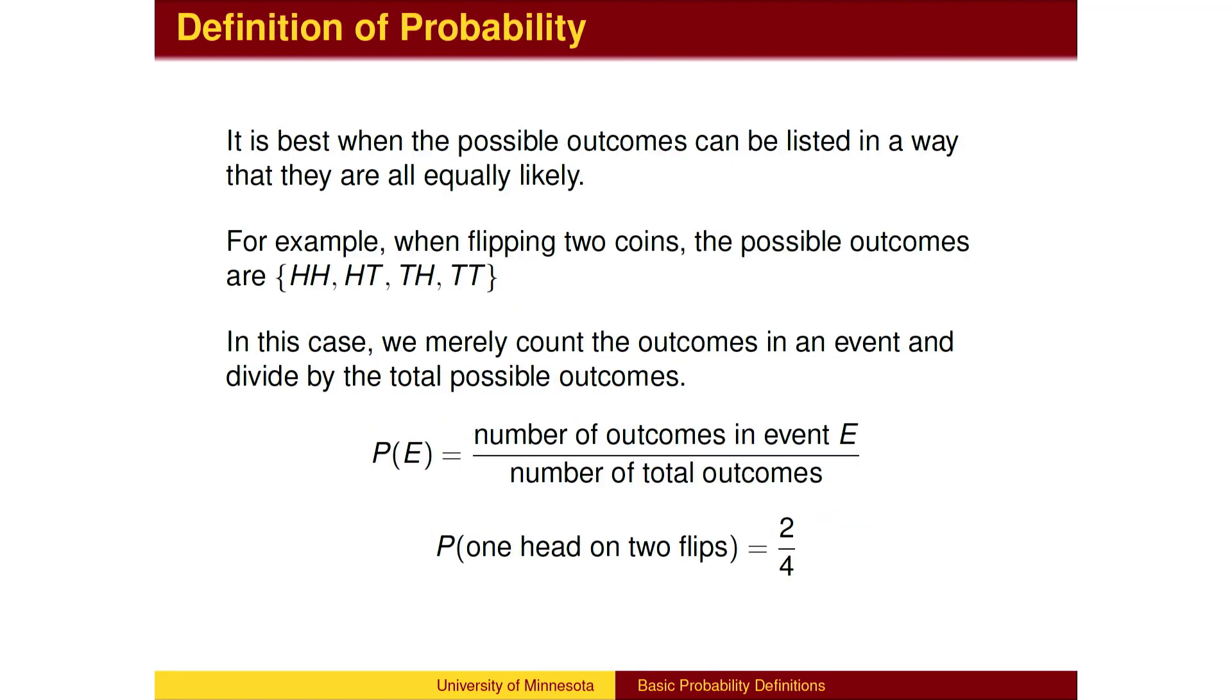It is best when the possible outcomes are listed in a way that they are all equally likely. In this case, we merely count the number of outcomes in the event and divide by the total possible outcomes.